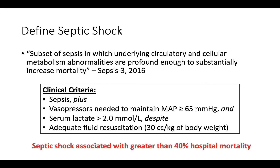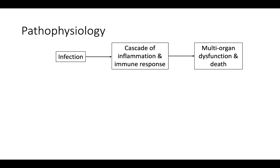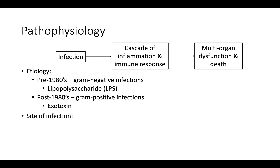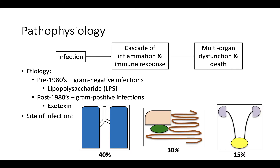Now let's describe the pathophysiologic abnormalities and clinical manifestations of septic shock. At its most basic, sepsis represents the body's immune response to infection — triggering a cascade of inflammatory and immune responses that can potentially lead to multi-organ dysfunction and death. Prior to the 1980s, gram-negative infections predominated, with lipopolysaccharide (LPS) of the bacterial cell wall triggering the inflammatory response. Since the 1980s, gram-positive infections have been the most common cause of sepsis, with staph aureus and strep pyogenes triggering inflammation via exotoxin. Sepsis is most commonly caused by infections of the respiratory system, followed by the GI and GU systems.